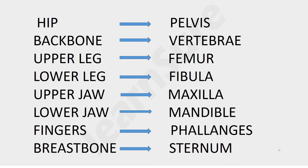Upper jaw — we call it maxilla. Lower jaw — we call it mandible, which is the only bone we can move freely in the skull. Fingers — we call them phalanges. Phalanges is very important; we should know what we call the bones of the fingers. Breast bone — we call it sternum. These are the most important bones whose scientific names I have shared with you.